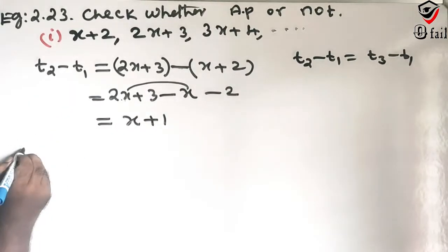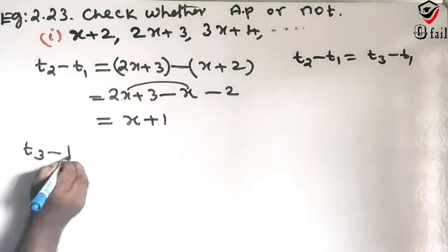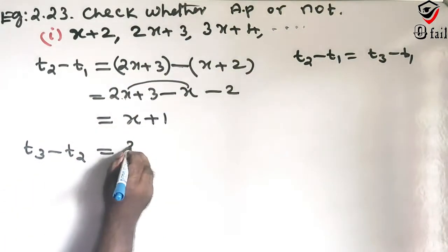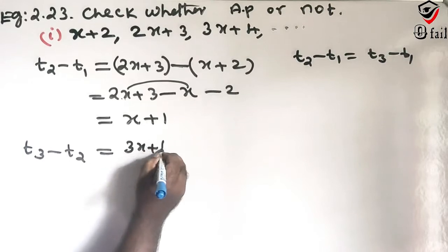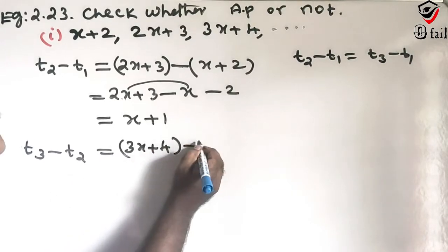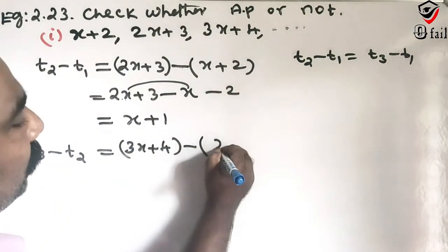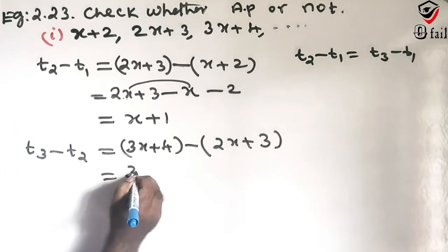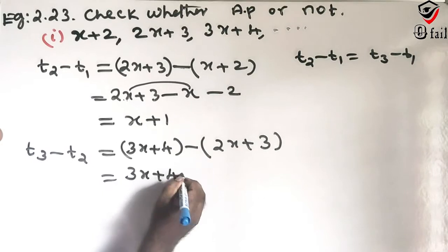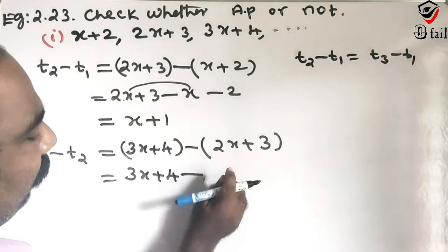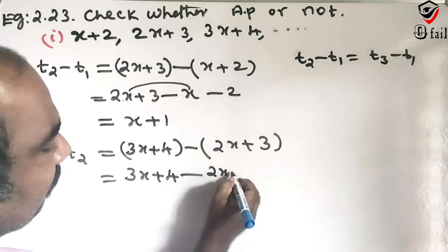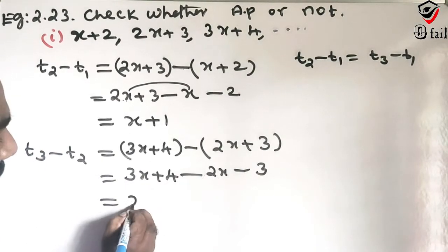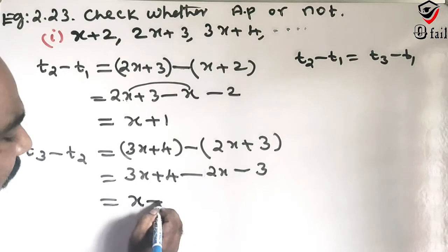Now T3 minus T2: T3 is 3X plus 4, and T2 is 2X plus 3. So 3X plus 4 minus 2X minus 3, which gives 3X minus 2X equals X, and 4 minus 3 equals 1. So T3 minus T2 equals X plus 1.